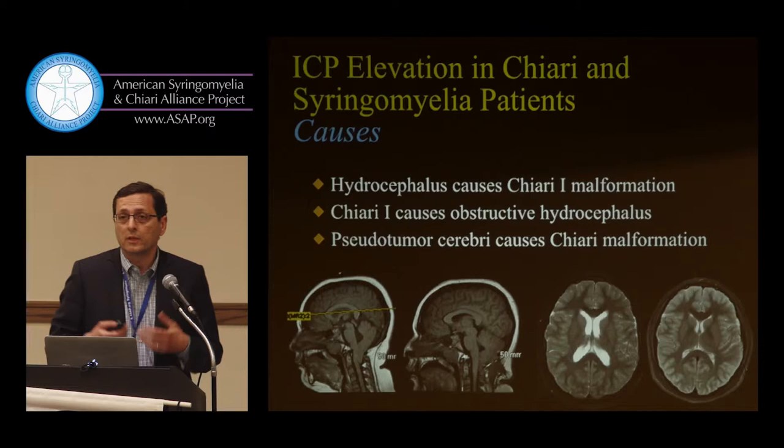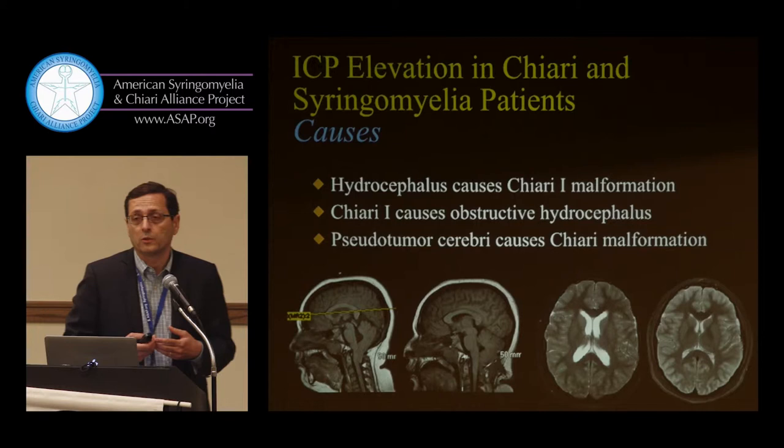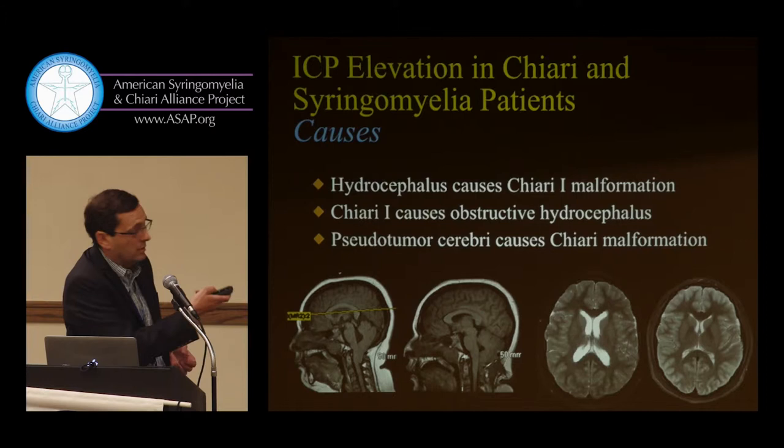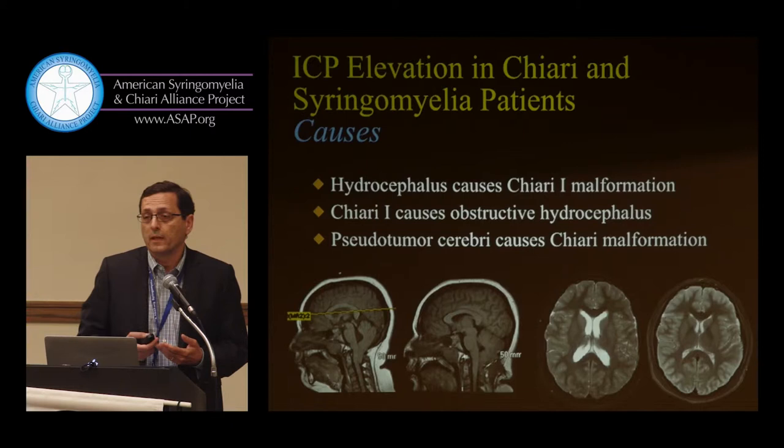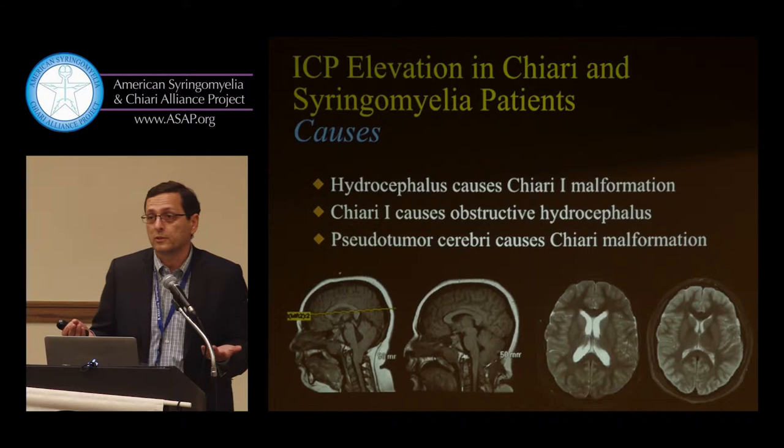Until this patient came along — a child who came in with high pressure in her head, papilledema (meaning the eyes are getting damaged because of the pressure), and she had both a Chiari malformation and hydrocephalus. I was going to put a shunt in, and then I found out that her brother has Chiari and her father has Chiari and syringomyelia — neither of whom had hydrocephalus.